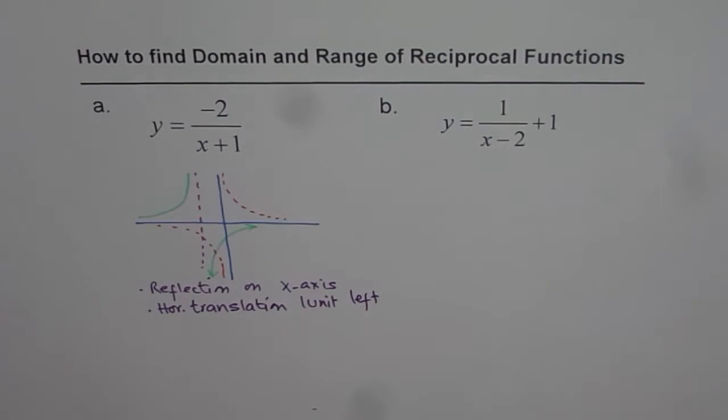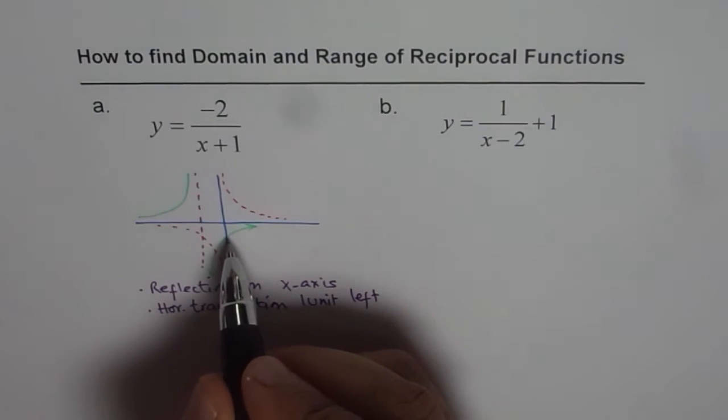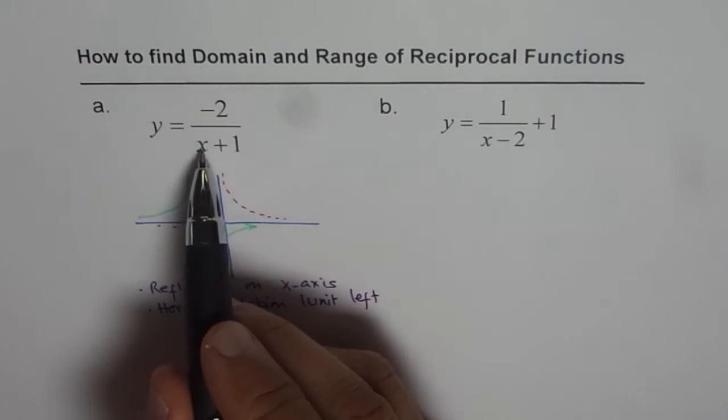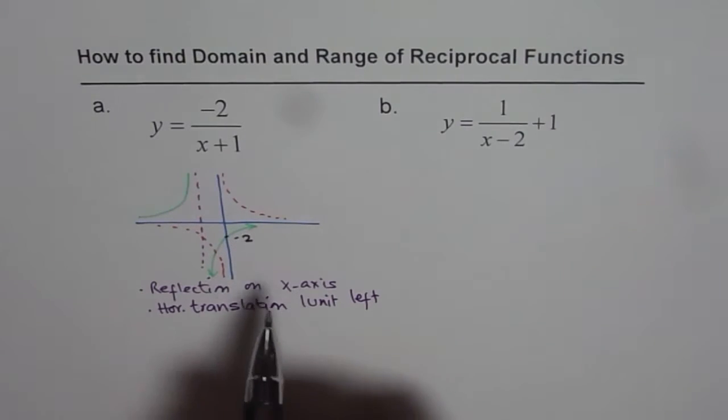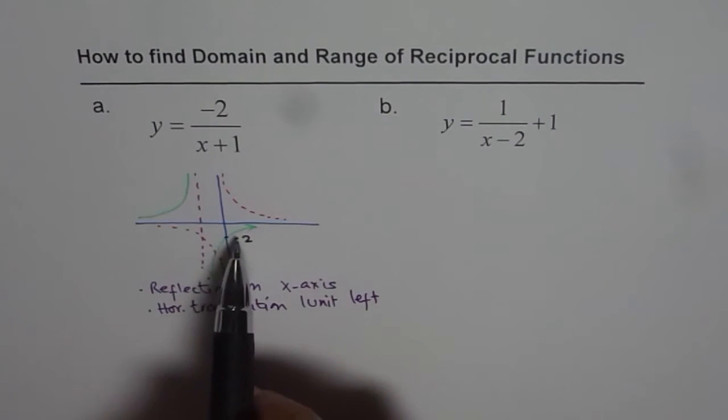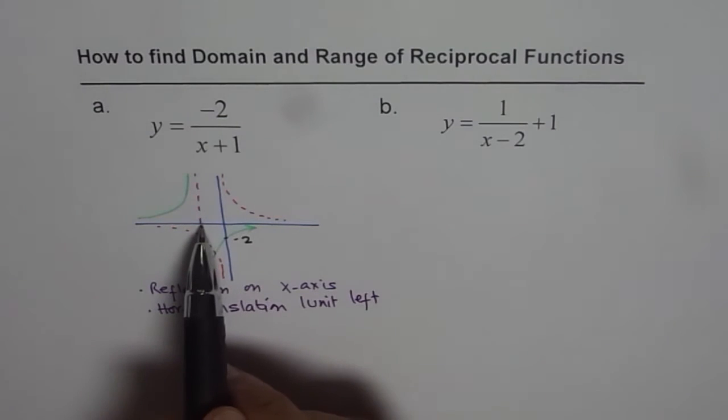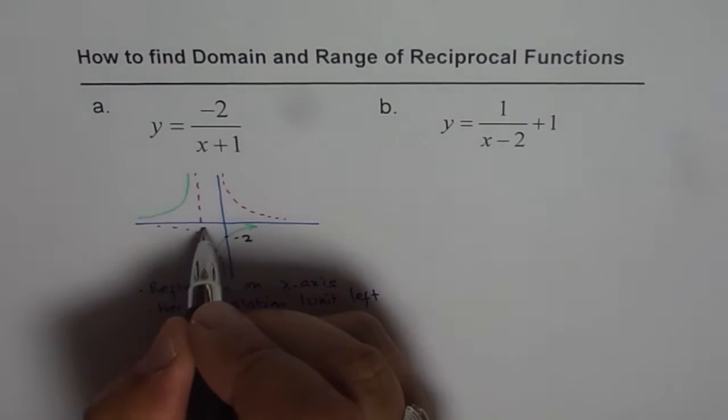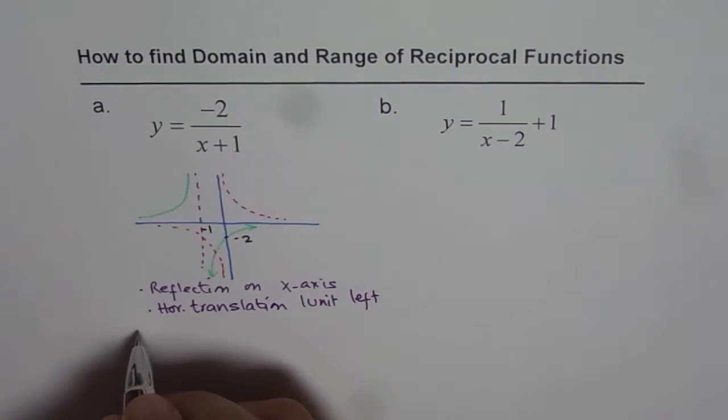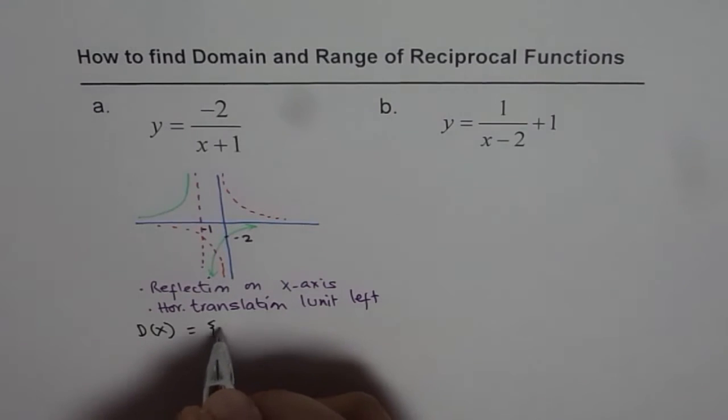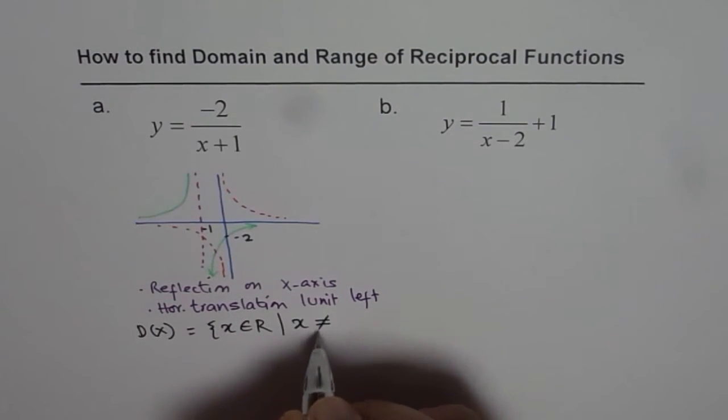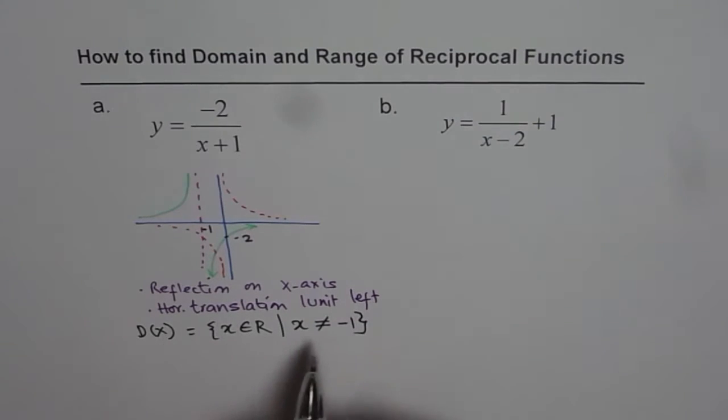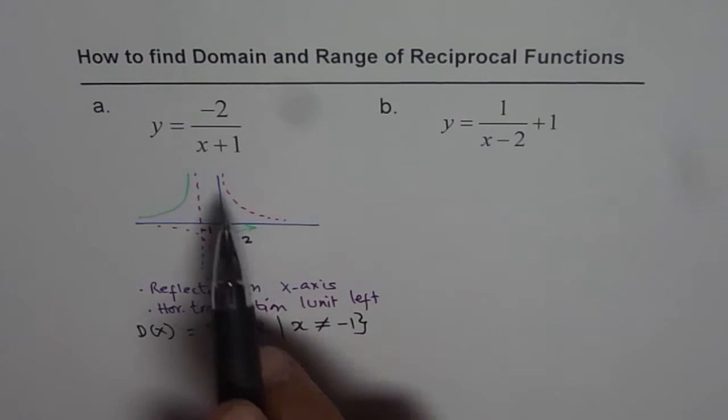Now it is not very important in this case to find the y-intercept, but you can always find it. Placing x equals 0 gives us a value of minus 2. But what is important here is that domain has all the real numbers but not minus 1. So from here we can write that domain is a set of real numbers where x is not equal to minus 1. So that is how we can find domain with the help of transformation.